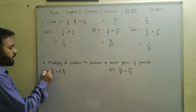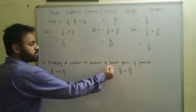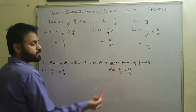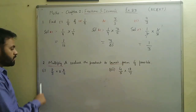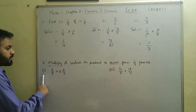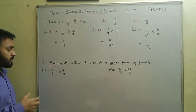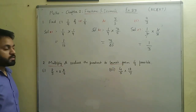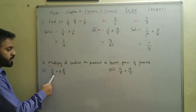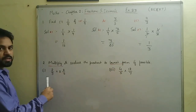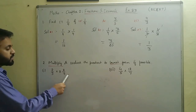In question two, we have to multiply the fractions and then change them to lowest form if possible. Question two has seven parts but we are going to do only the first and seventh part, as the remaining parts are similar. In the first part, we have a proper fraction and a mixed fraction to multiply.